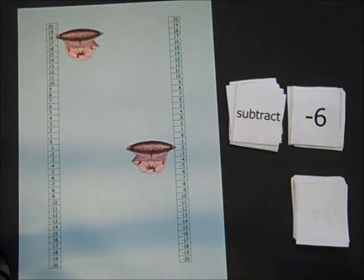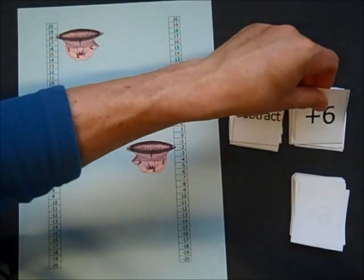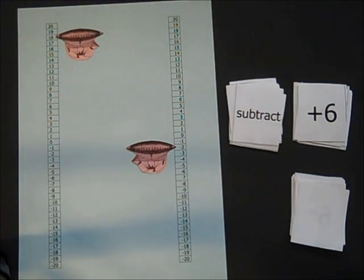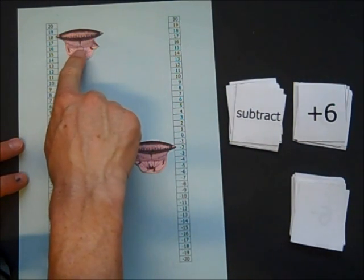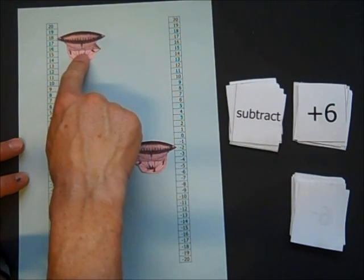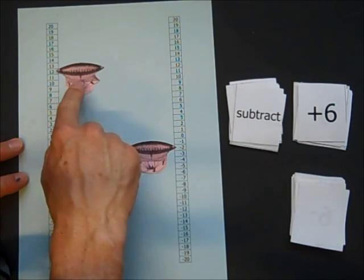I'm going to subtract positive 6. So I'm going to take away 6 puffs of hot air. That's going to drag me down 6 places. I was at 18. I'm going to end up at 12.